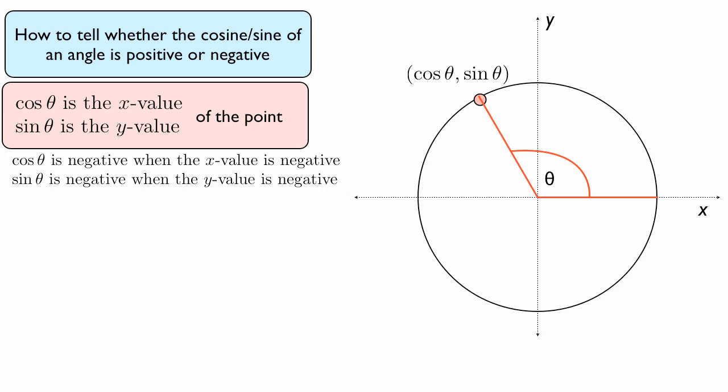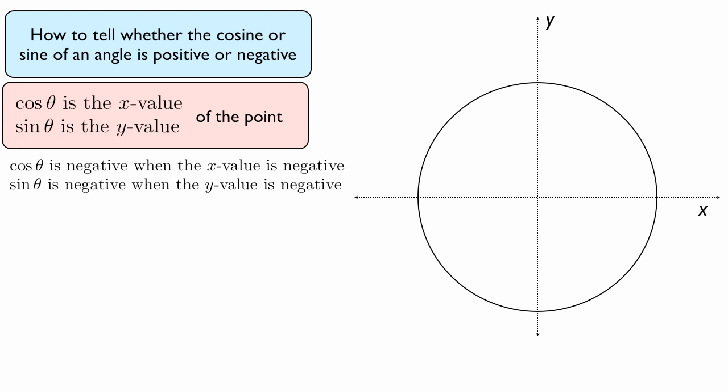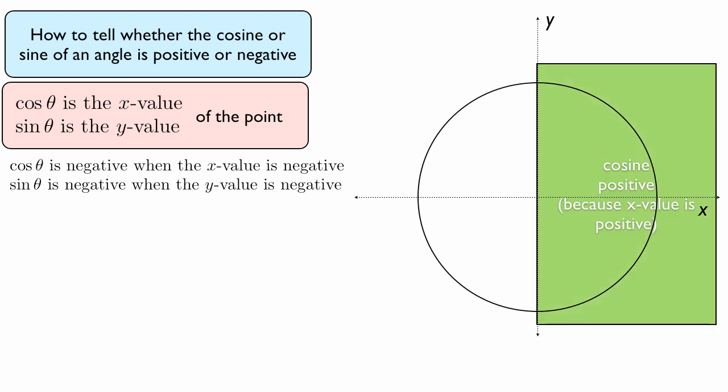So we're going to illustrate that with a couple of examples. Here we have, again, a blank unit circle. And we're going to draw the two sections where, first of all, this is the first section. This green area is where cosine is positive.